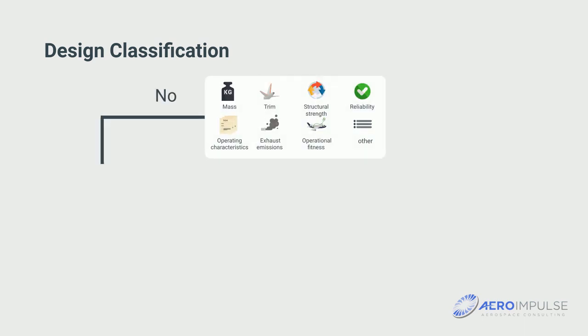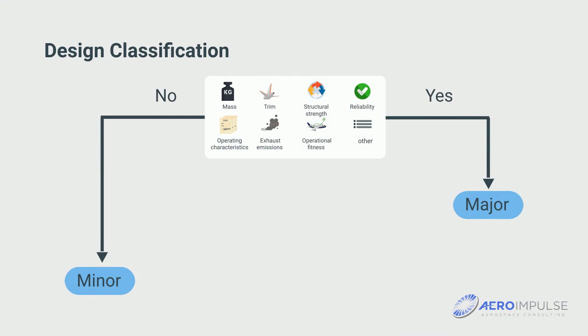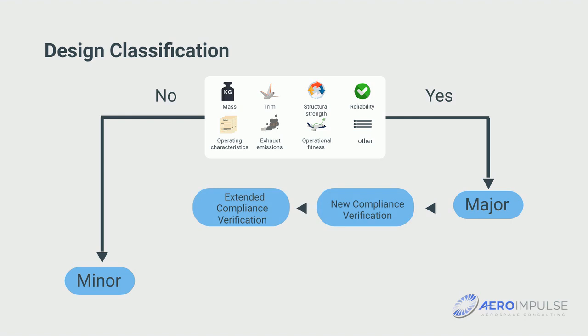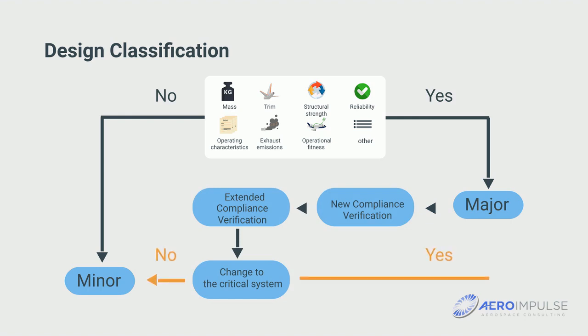In the first step, it is asked whether the above criteria are fulfilled. In a second step, it also plays a role whether a renewed or extended showing of compliance is necessary, or whether the changes are to a critical system. If there are doubts about the classification, the authority should be involved in the decision.